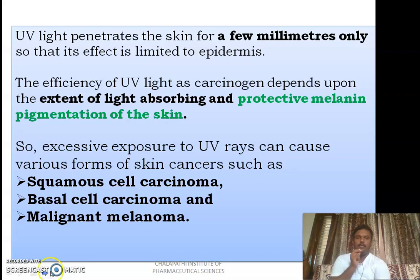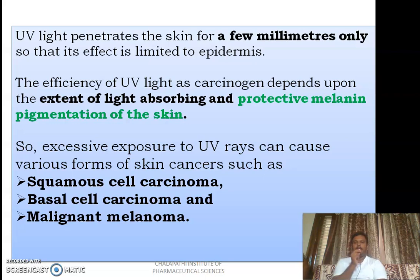The most important aspect to learn here is protective melanin pigmentation. Melanin present in our skin is protective against the development of cancers due to UV radiation. Those individuals who are fair and have very little melanin pigment in their skin will be at greater risk of developing skin cancers compared to those individuals who are dark and have a greater amount of melanin pigment in their skin.